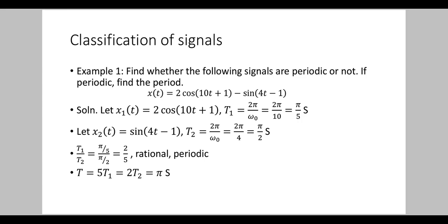Similarly, let x2(t) = sin(4t − 1). Here, time period T2 = 2π/ω₀ = 2π/4 = π/2 seconds. Now take the ratio T1/T2 = (π/5)/(π/2) = 2/5, which is a rational number. So we can say that x(t) = 2cos(10t+1) − sin(4t−1) is periodic, and the period T = 5·T1 = 2·T2 = π seconds.